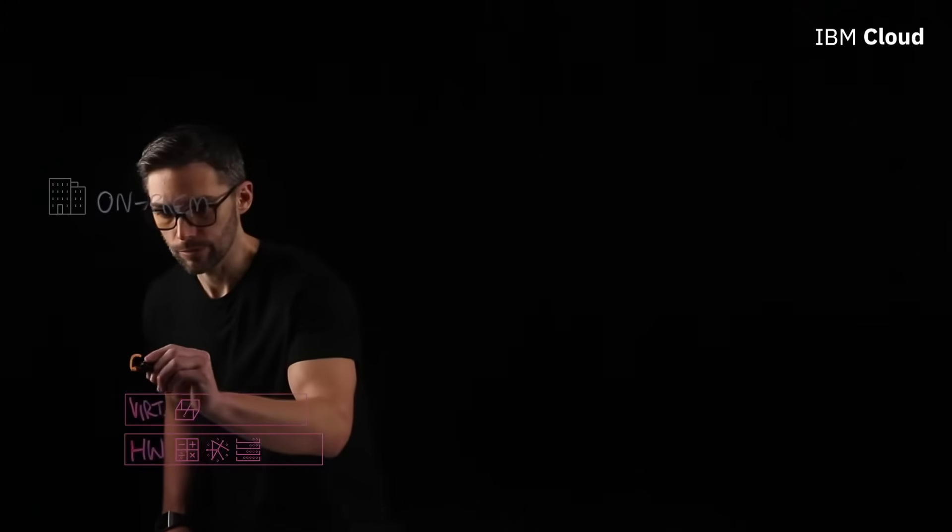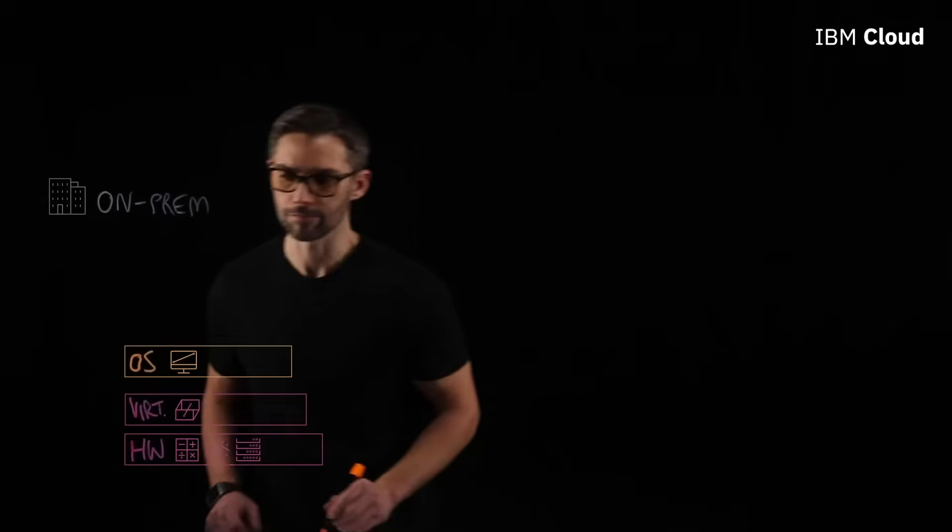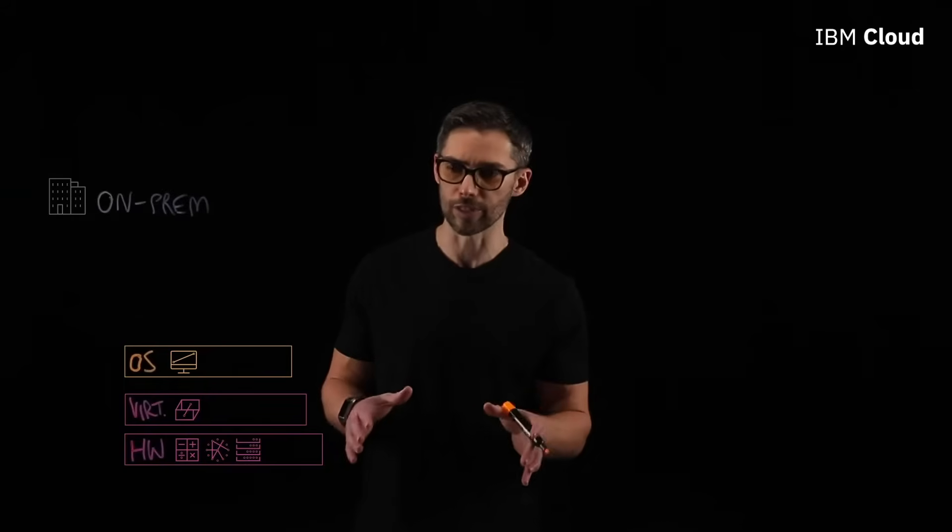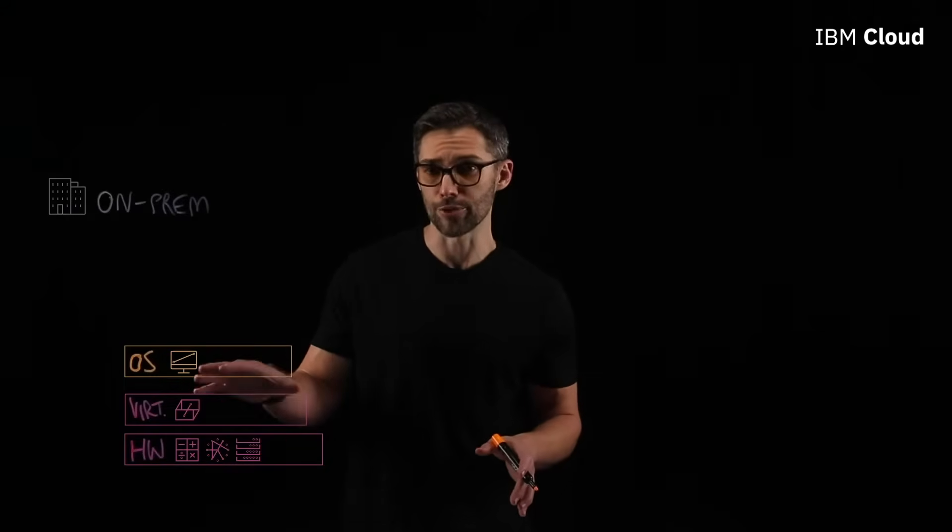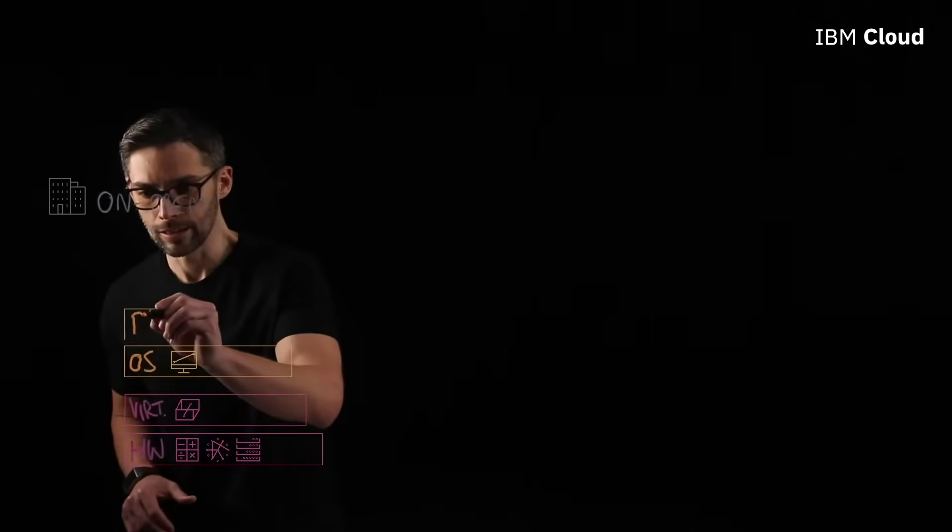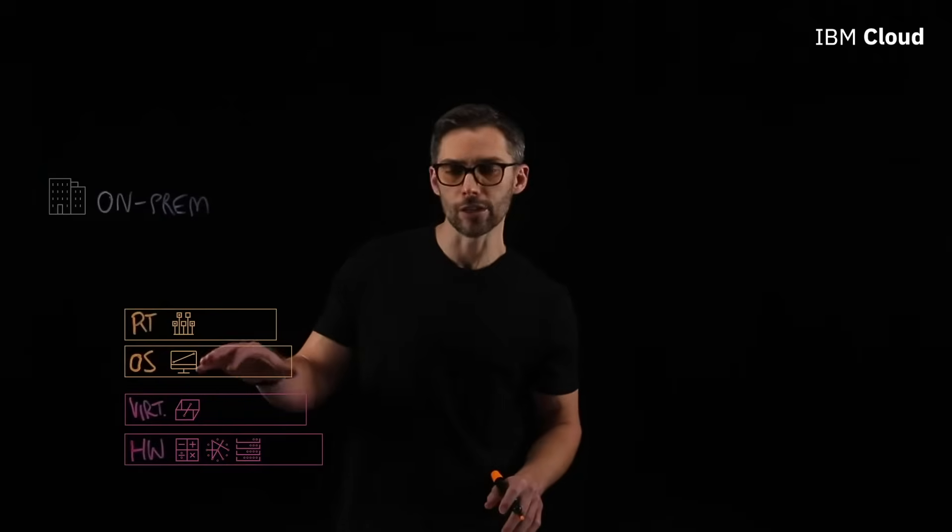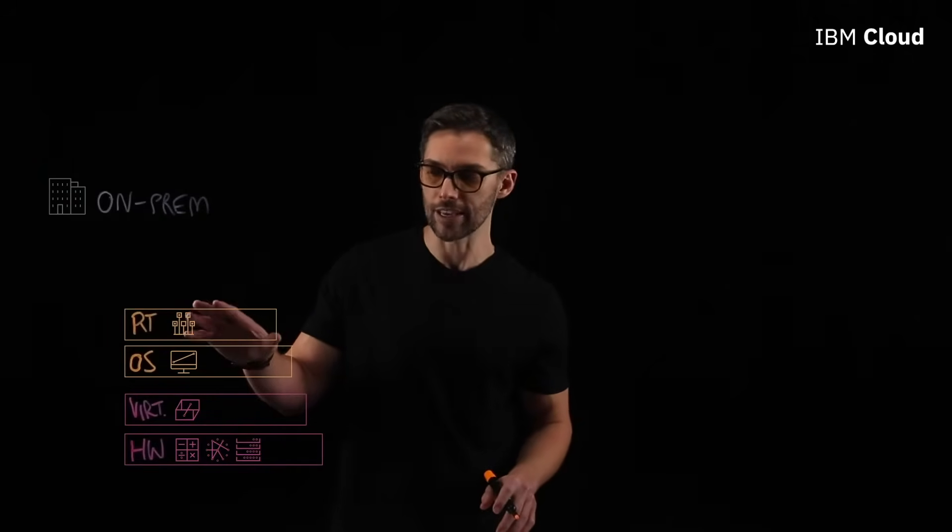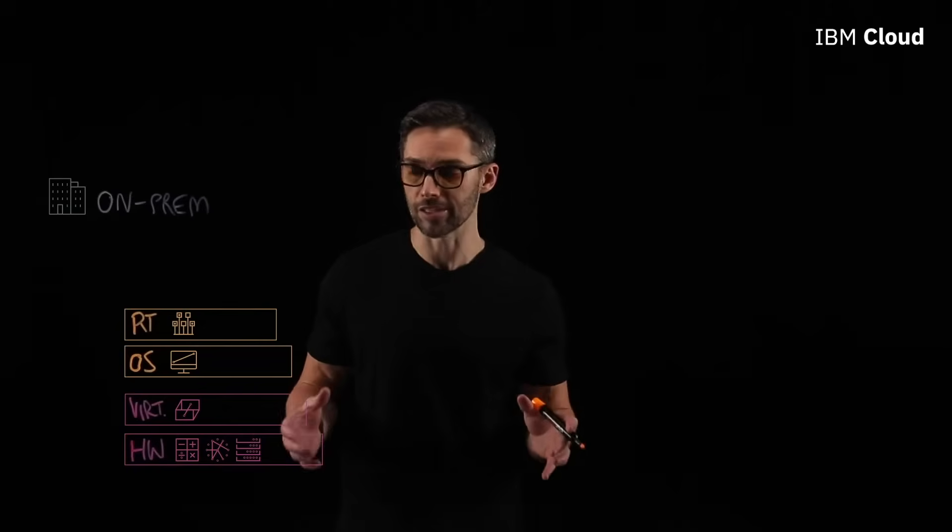And then moving on up, then move into our operating system. And I'm sure most of you are aware of what this is. This would be the software that's actually on your computer and enables programs to run. And then on top of that, we run into our runtime. And this would really be the glue between your operating system and your application. And it would be the environment that your application operates in.